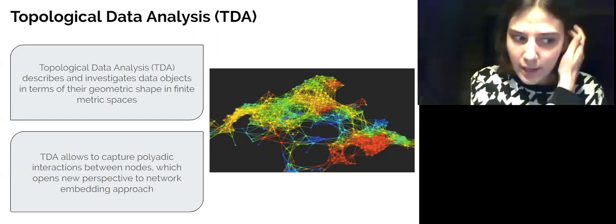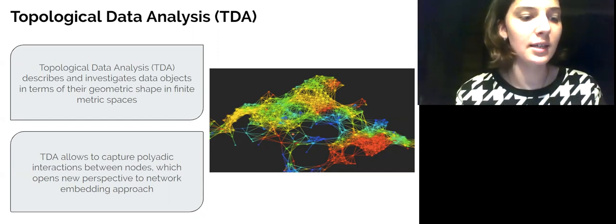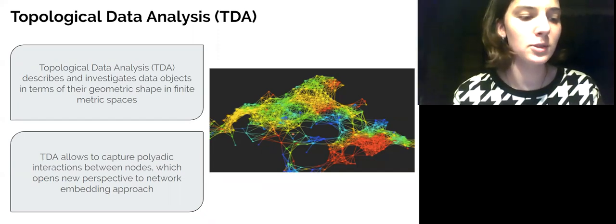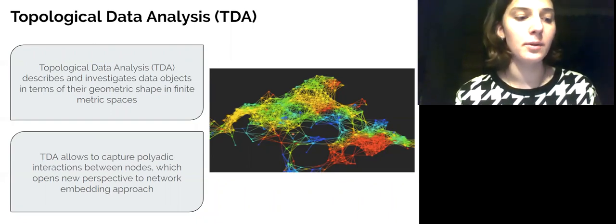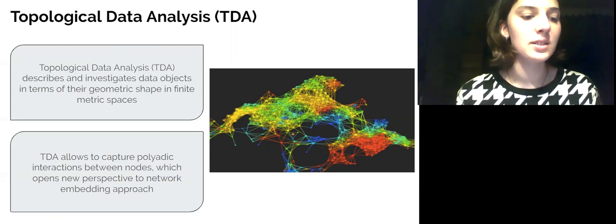The central assumption underlying TDA is that data objects can be described and analyzed in terms of their geometric shape into finite metric spaces. Discovering various topological features of data might clarify its generation process, organizational and structural properties.